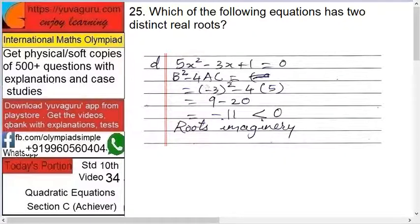(-3)² - 4 into 5 into 1, so 9 - 20 = -11, that is less than 0. So roots are imaginary. Okay, so only B has real and distinct roots.